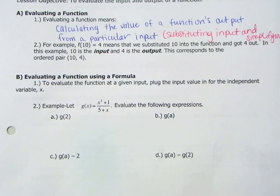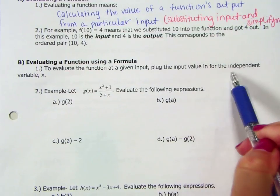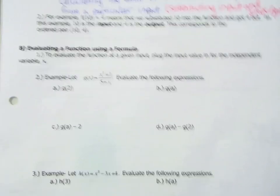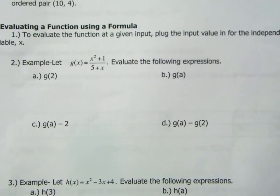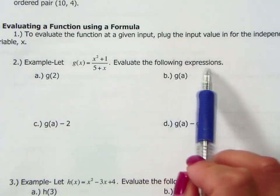So let's do some examples actually evaluating a function. It says to evaluate the function at a given input, plug the input value in for the independent variable, in this case x. So here we go. So we are going to let our function be g(x) equals x squared plus 1 over 5 plus x. We are going to evaluate the following expression.